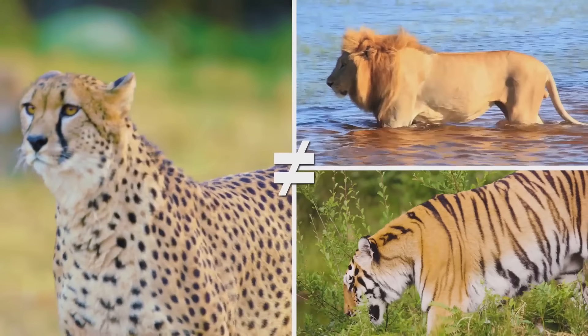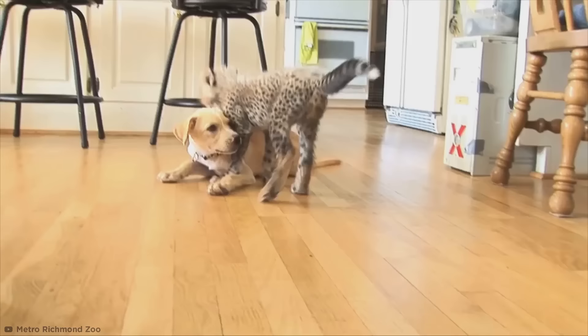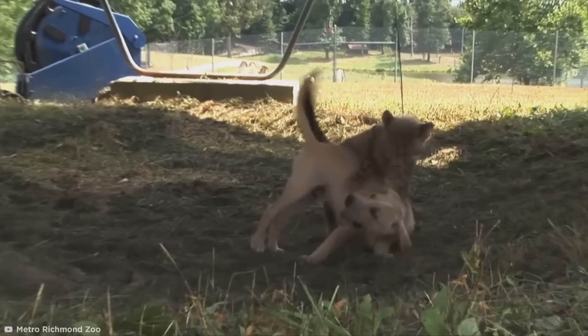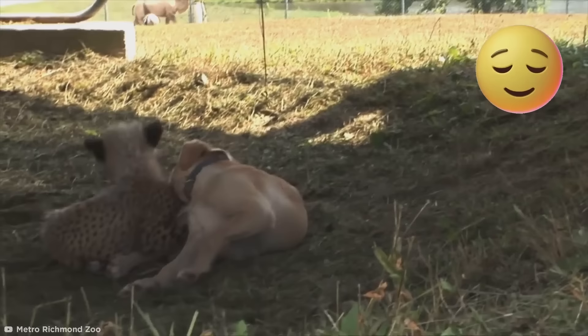So when you pair a cheetah cub with a guide dog, the cat naturally looks to the more outgoing and curious dog for cues and learns to model their behavior. By reading the lovable, happy-go-lucky vibe that pooches generally give off, the cheetah becomes calmer and more confident. And hopefully that translates well in the bedroom.